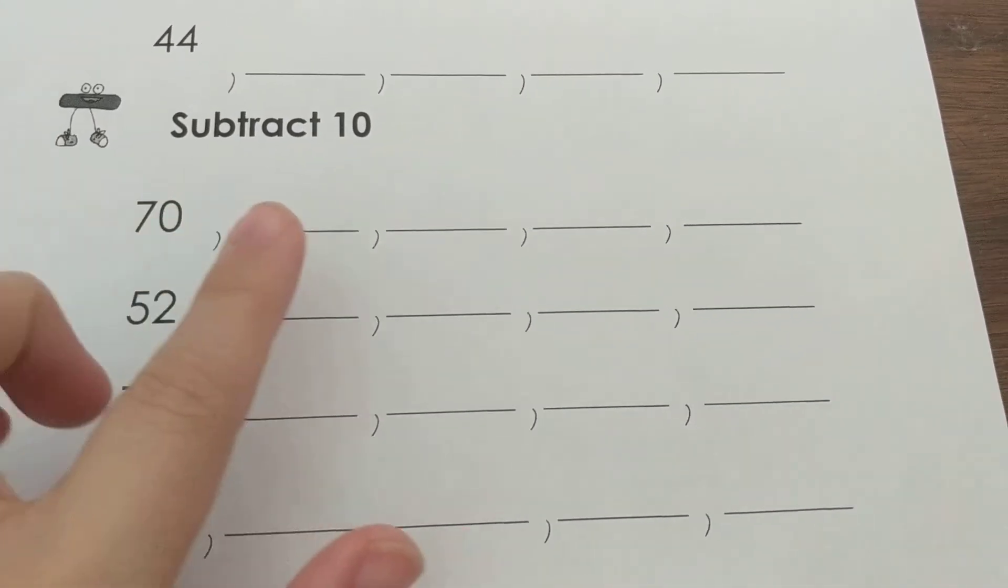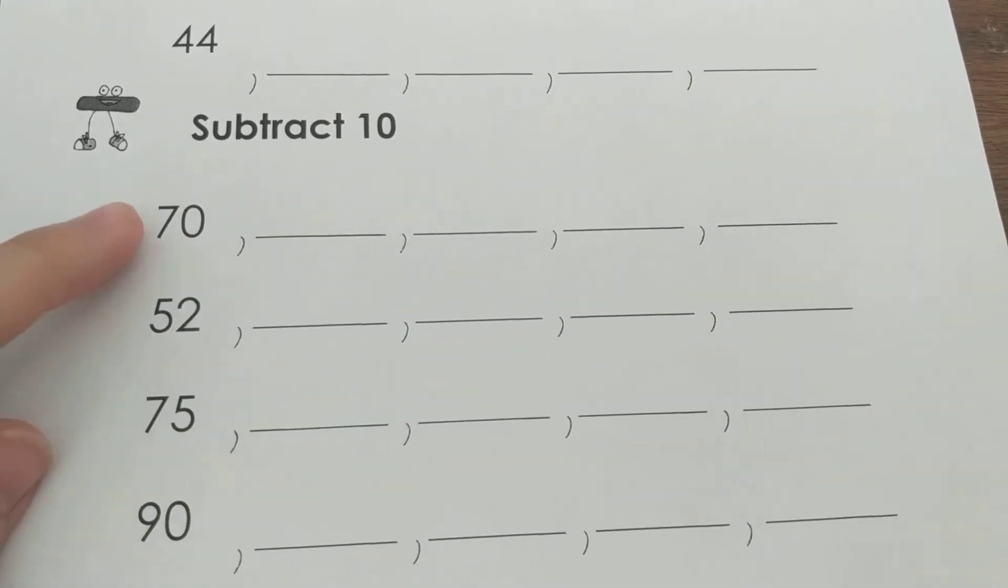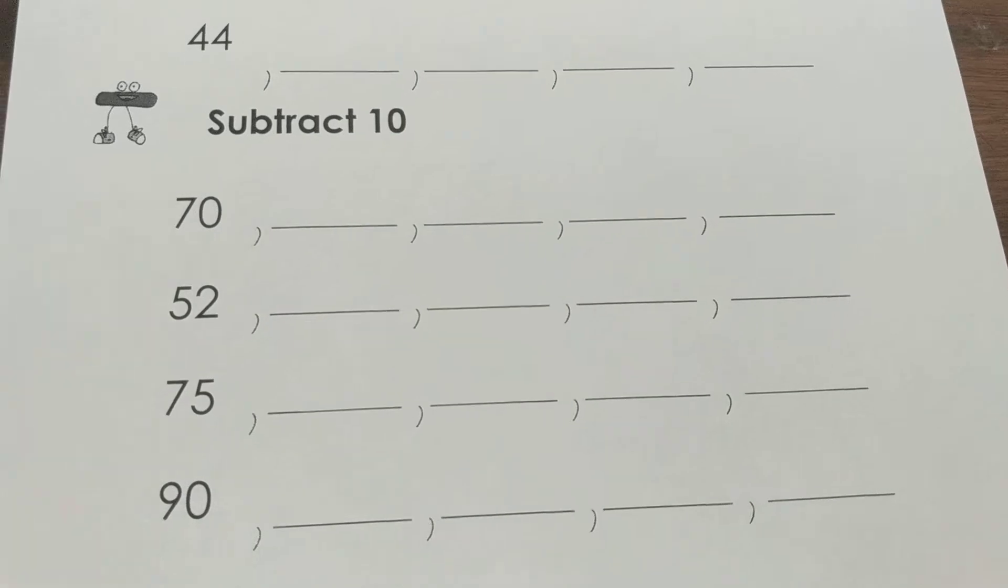So if my first number is 70, I would do 60, 50, 40, 30. And again I'm just taking my 10's place and taking it down a digit.